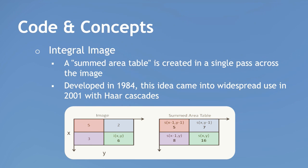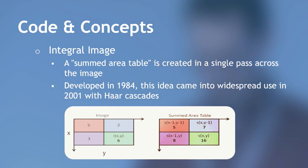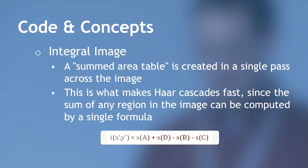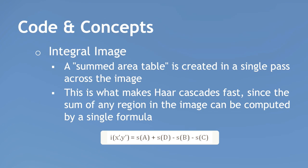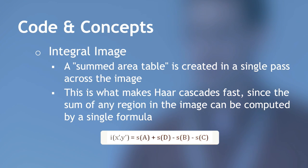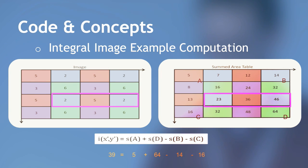The formula is: to find the sum of all pixel values in a particular area, you take the sum of A plus the sum of D minus the sum of B minus the sum of C. That gives you the answer and it takes about 60 processor instructions, so it's really, really fast.